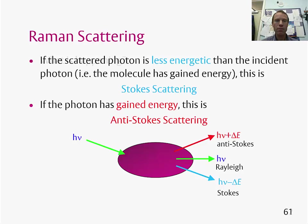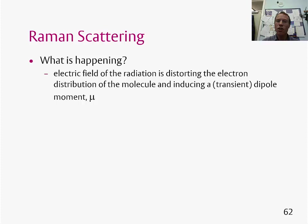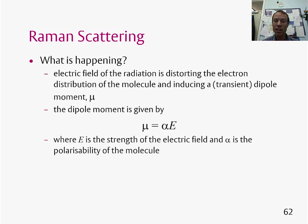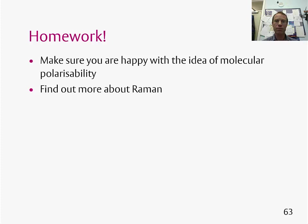In Raman scattering, the electric field of the radiation distorts the electronic distribution of the molecule, inducing a transient dipole moment, written with the Greek letter mu. The dipole moment of the molecule can be given by the expression mu = alpha times E, where E is the strength of the electric field — effectively related to the intensity of the light — and alpha is the polarizability of the molecule, which describes how easy it is to distort the electron distribution of a molecule. Some homework: read a little more about molecular polarizability and make sure you are happy with this concept, as it is a new one.